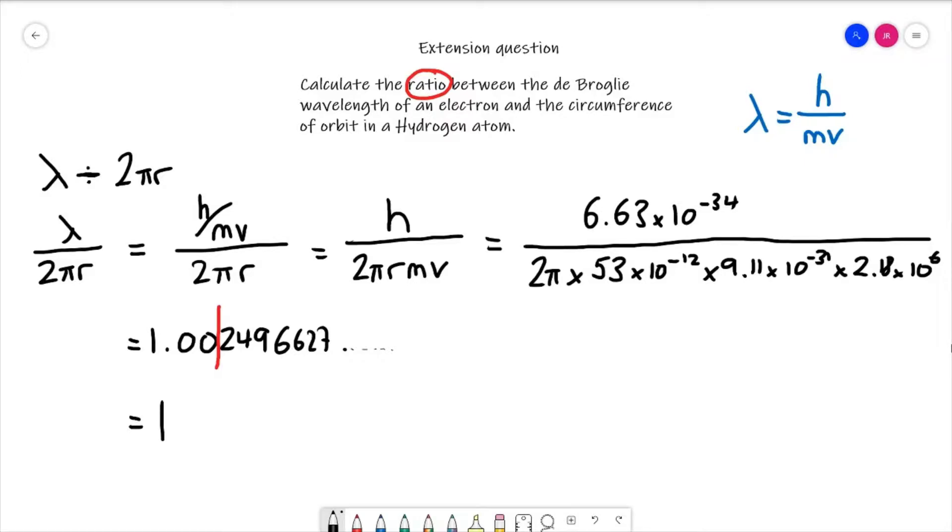In other words, the de Broglie wavelength of an electron is exactly the same as the circumference of orbit. Now that result in itself, if you've got one, brilliant, well done for getting that. But that result in itself is actually quite fundamental to us in quantum physics.